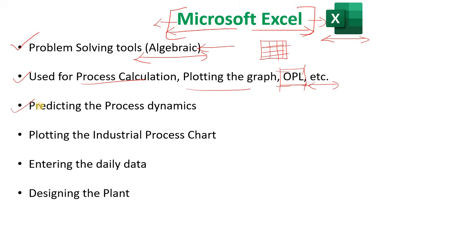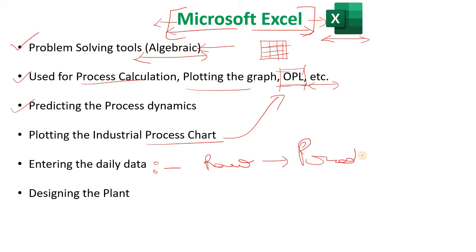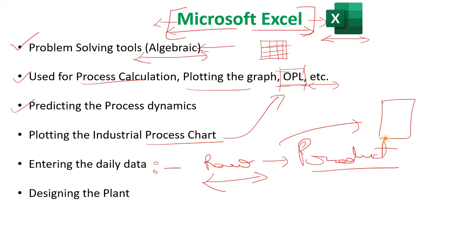We also use Excel to predict process dynamics, plot industrial process charts, and enter daily data — for example, tracking how much raw material is being used and how much product is being produced. Monthly reports can be prepared from this data. Excel is also used to check process efficiencies, and in many industries it is even used to design plants and make BFDs and PFDs.